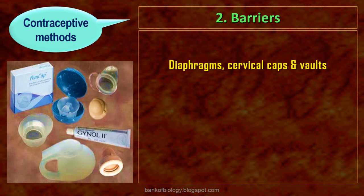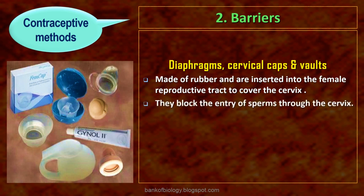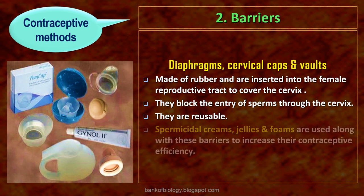Diaphragms, cervical caps and vaults are made of rubber and are inserted into the female reproductive tract to cover the cervix during coitus. They block the entry of sperms through the cervix. They are reusable. Spermicidal creams, jellies and foams are used along with these barriers to increase contraceptive efficiency.